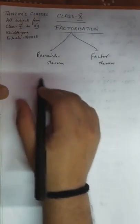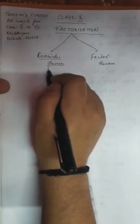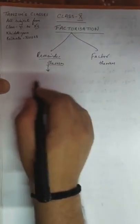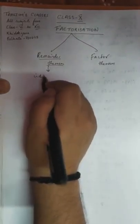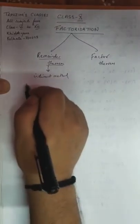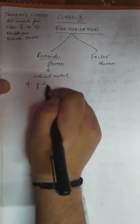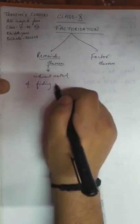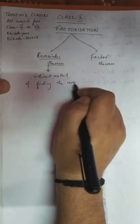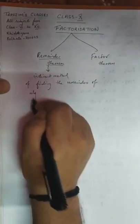Our first topic is the remainder theorem. The remainder theorem is an indirect method of finding the remainders of algebraic polynomials.